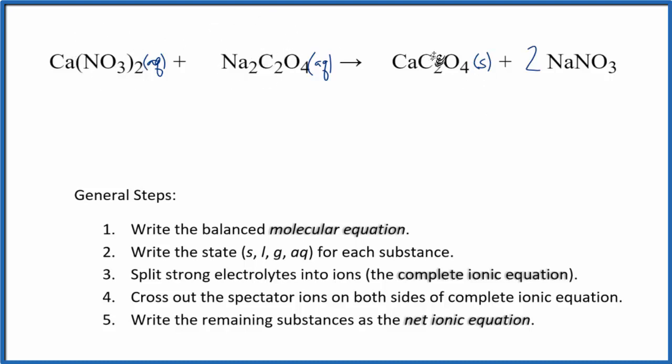These two compounds will react. This will precipitate out to the bottom. Nitrate's very soluble, so we'll put a little AQ for aqueous. That's going to dissolve in water. Now we can split the strong electrolytes apart into their ions. That'll give us the complete ionic equation.